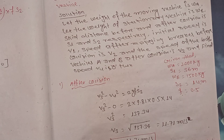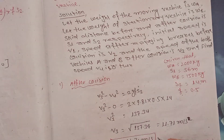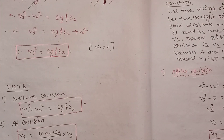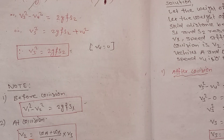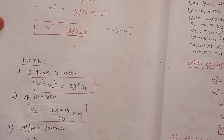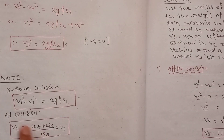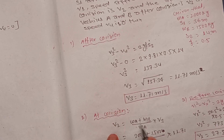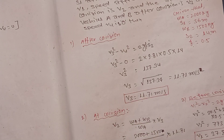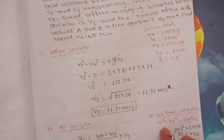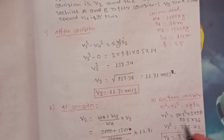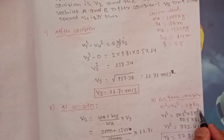V3 is equal to 11.71 meters per second. Then applying the at collision condition and before collision condition: V1² minus V2² equals 2g·f·S1. V2 is calculated using the momentum at collision. V2 equals 20.52 meters per second. S1 equals 36 meters. Using these values, we work through to get the initial velocity V1.